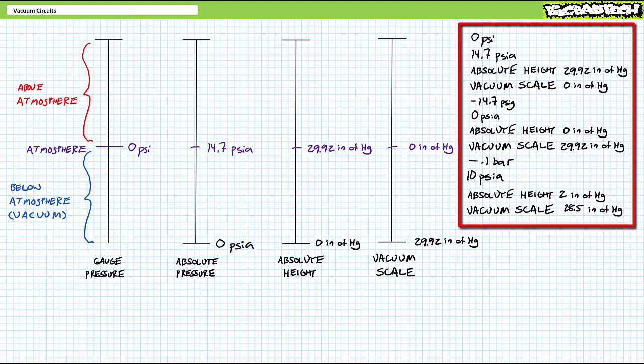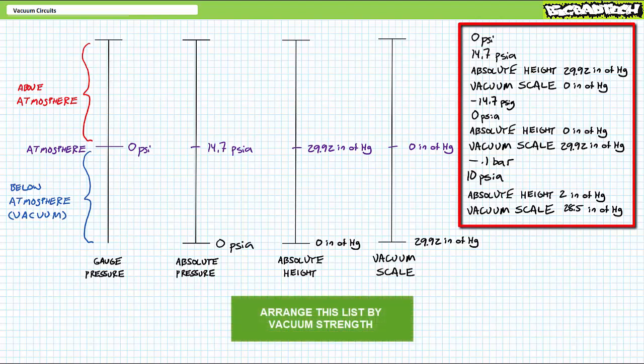Which of these measurements is the strongest vacuum? 0 PSI gauge, 14.7 PSI absolute, an absolute height rating of 29.92 inches of mercury, a vacuum scale rating of 0 inches of mercury, a gauge rating of negative 14.7 PSI gauge, an absolute rating of 0 PSI absolute, an absolute height rating of 0 inches of mercury, a vacuum scale rating of 29.92 inches of mercury, and just to make it fun, negative 0.1 bars, 10 PSI absolute, 2 inches of mercury in the absolute height scale, and 28.5 inches of mercury in the vacuum scale. Again, I'm not asking for numerical results or unit conversions. All I'm asking you is to get a general idea of what is and what is not a strong vacuum. If you're up to the challenge, think you could order this list, weakest to strongest vacuum? By all means, pause the lecture and try this on your own.